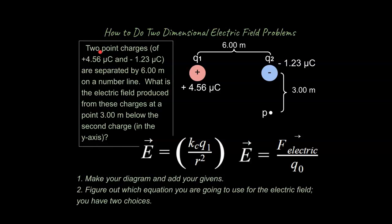The problem I made up here says this: two point charges of positive 4.5 microcoulombs and negative 1.23 microcoulombs are separated by 6 meters on a number line. What is the electric field produced from these charges 3 meters below the second charge in the y-axis? That's the setup to the problem.